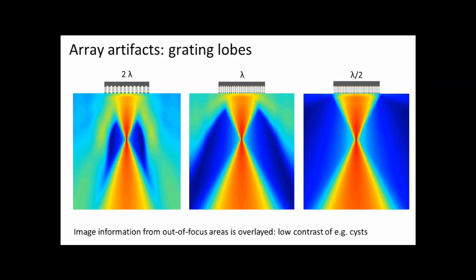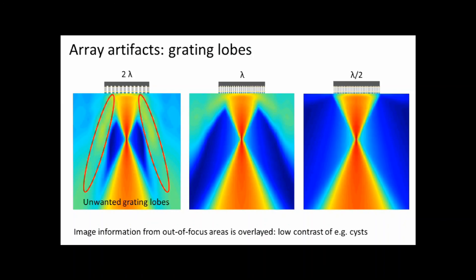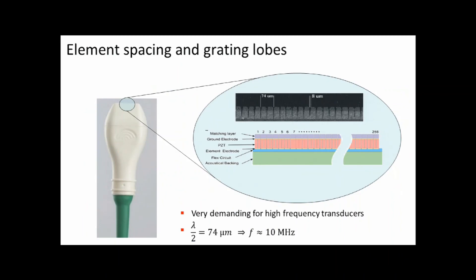Another artifact worth noting is grating lobes, relevant if you buy an ultrasound system and array. You can calculate the element spacing from the array width and number of channels. If the spacing is too large you get grating lobes, meaning when you intend to image one line you are simultaneously imaging lines at other angles. Ideally you want lambda-half spacing, but in small animal scanners this is very difficult to achieve — for example, you may need to cut 8-micron channels between elements with a laser. It is quite a challenge to produce small animal systems.